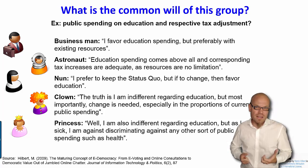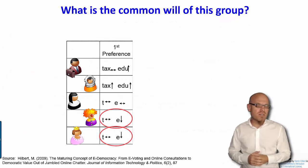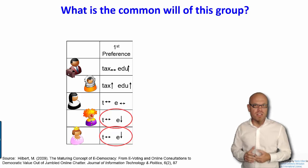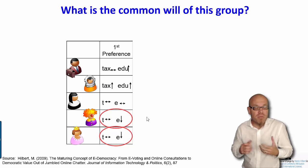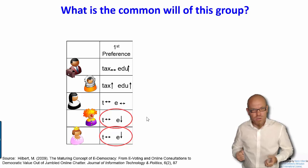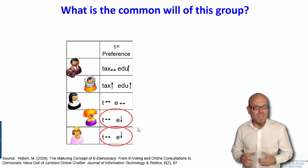Education up and or taxes up in order to finance it or not. If we go for the second version, that's what it could look like. First preference would be the business guy would say taxes should stay equal and education should be increased. The astronaut says bring the taxes up, bring the educational spending up. The nun says both should be in the status quo. And both the clown and the princess say taxes shouldn't be changed out of different reasons. And education spending, we prefer it to go down. So these five people would now vote. That's what would happen. The majority, consisting of the clown and the princess, would actually rule the society.